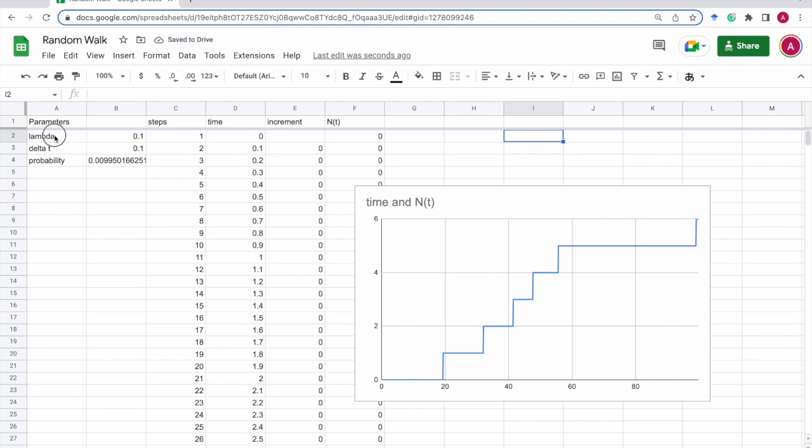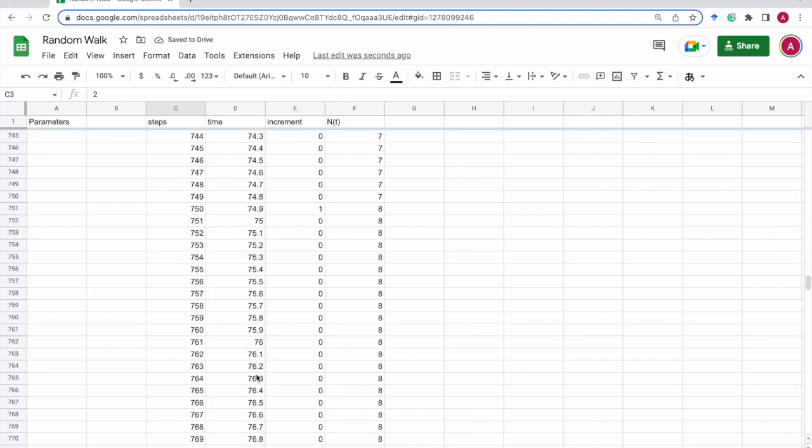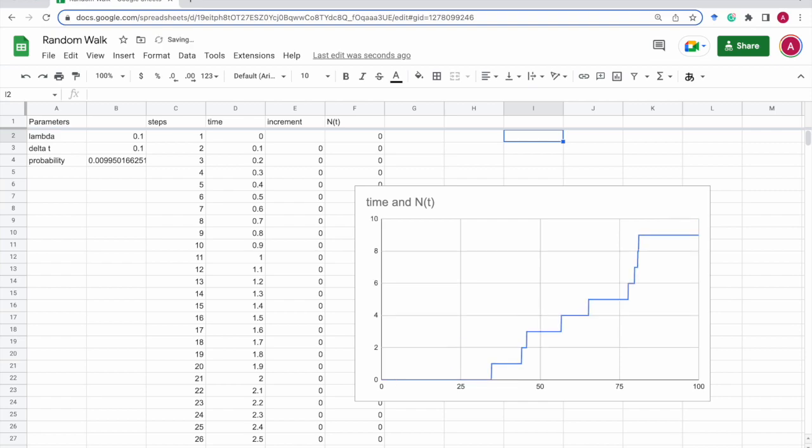By the way, since this lambda is 0.1, so up to time 100, the expectation value of this Poisson random variable should be time times lambda. So that will be 100 times 0.1, that is 10. So on average, the final value of this should be around 10. Of course, it depends on the sample, but on average, it should be around 10.